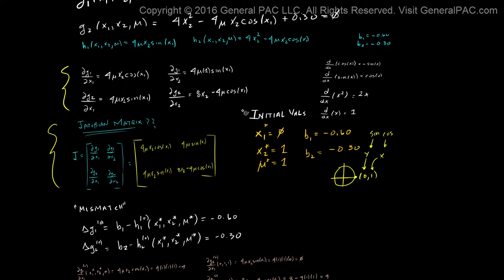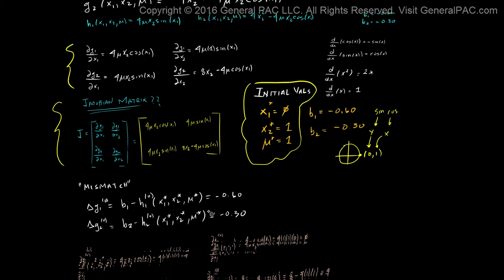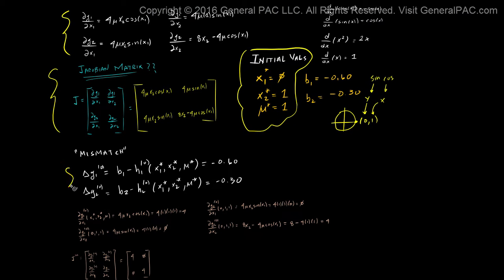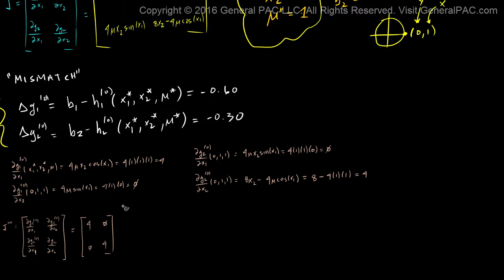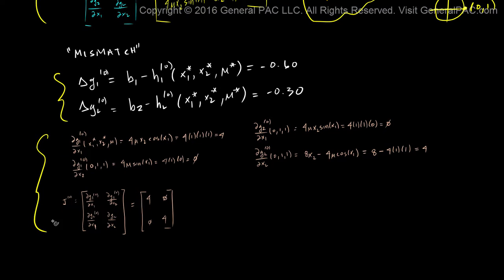We had some initial values and these initial values were presented in the book and we used these initial values to determine our first initial mismatch. And we also used the initial values to determine our 0th iteration for the Jacobian matrix, which is basically plugging in the initial values into the partial derivatives and determining the results.